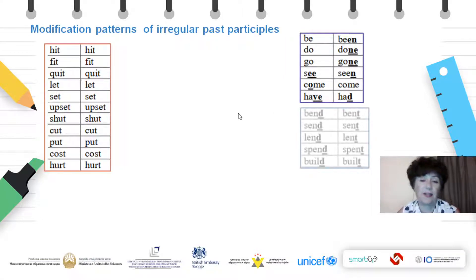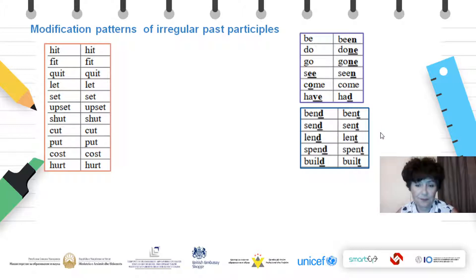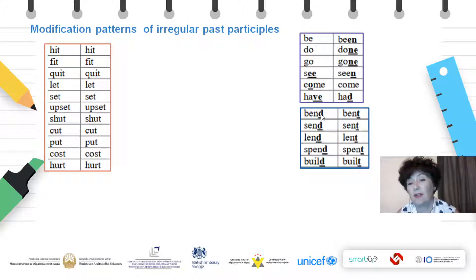Let's see another pattern. What do you see here? You see that the verb is almost the same — only the vowel I has been changed to U. The -ND ending becomes -NT: bend, bent. Send, sent. Et cetera, et cetera.